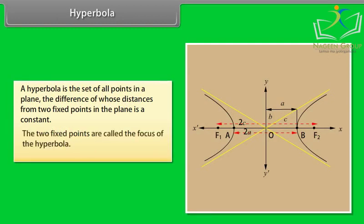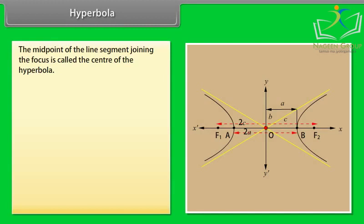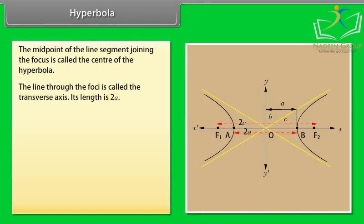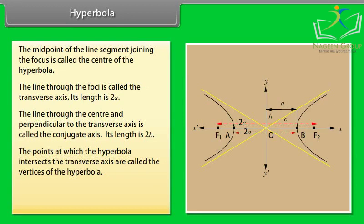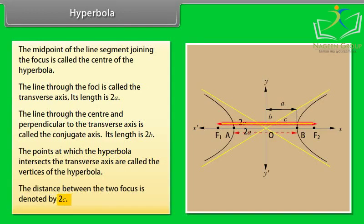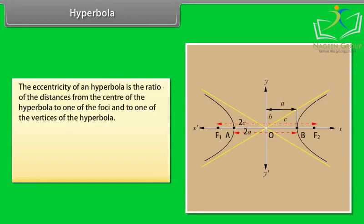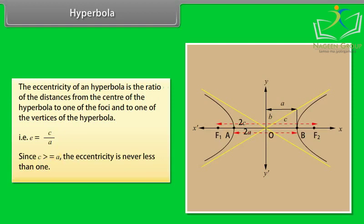A hyperbola is the set of all points in a plane, the difference of whose distances from two fixed points in the plane is a constant. The two fixed points are called the foci. The midpoint of the line segment joining the foci is called the center. The line through the foci is called the transverse axis; its length is 2a. The line through the center perpendicular to the transverse axis is called the conjugate axis; its length is 2b. The points where the hyperbola intersects the transverse axis are called the vertices. The distance between the foci is 2c. The eccentricity is e = c/a, and since c ≥ a, the eccentricity is never less than 1.